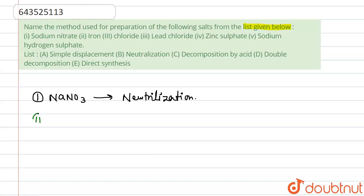We talk about our second salt, that is iron(III) chloride, FeCl3. This is prepared by direct synthesis of compounds.